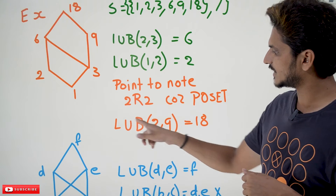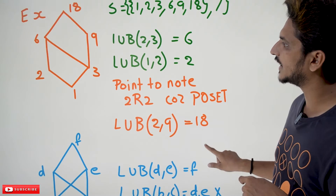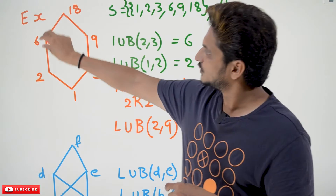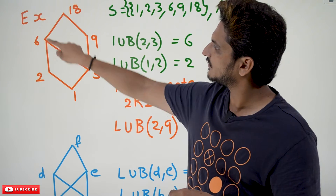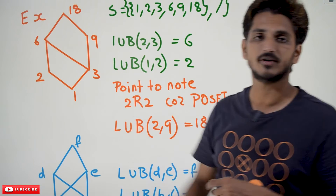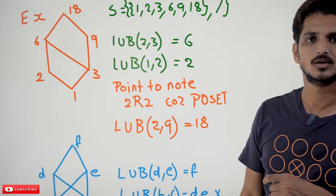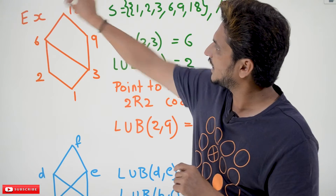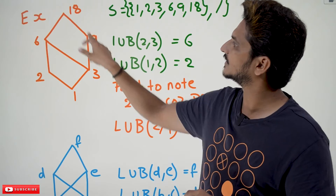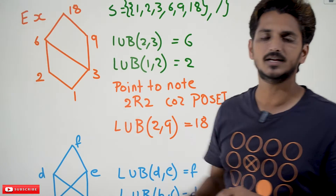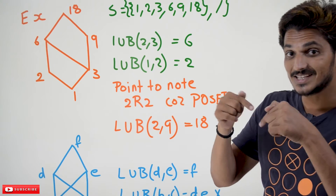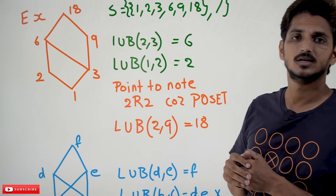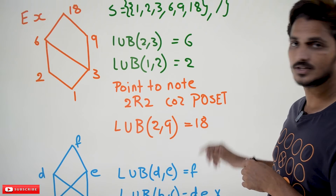Next example: Least Upper Bound of {2, 9}. Take element 6: 2 divides 6, but 9 does not divide 6, so 6 is not an Upper Bound for {2, 9}. Take 18: 2 divides 18 and 9 divides 18. So 18 is the Least Upper Bound for {2, 9}. LUB of {2, 9} = 18.